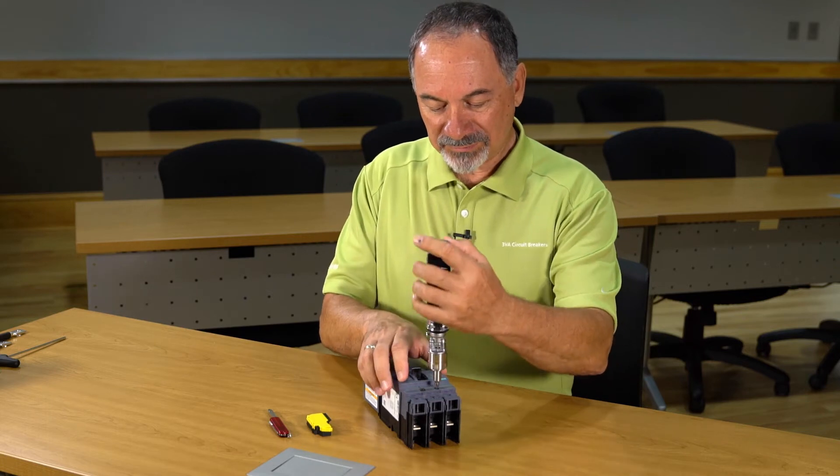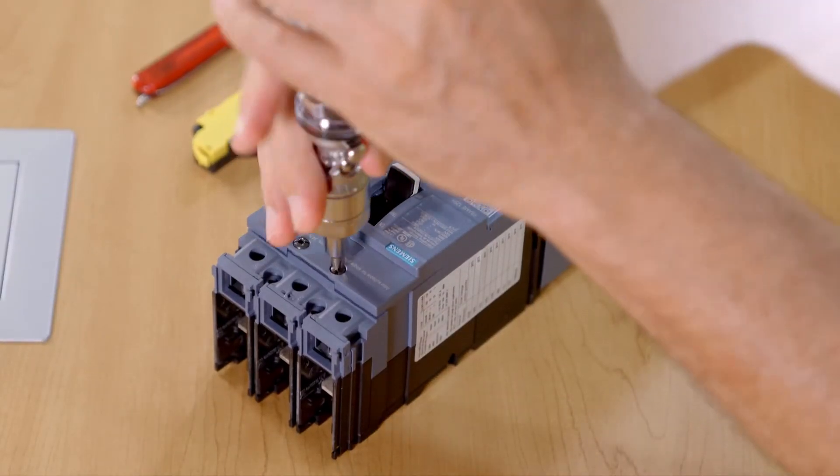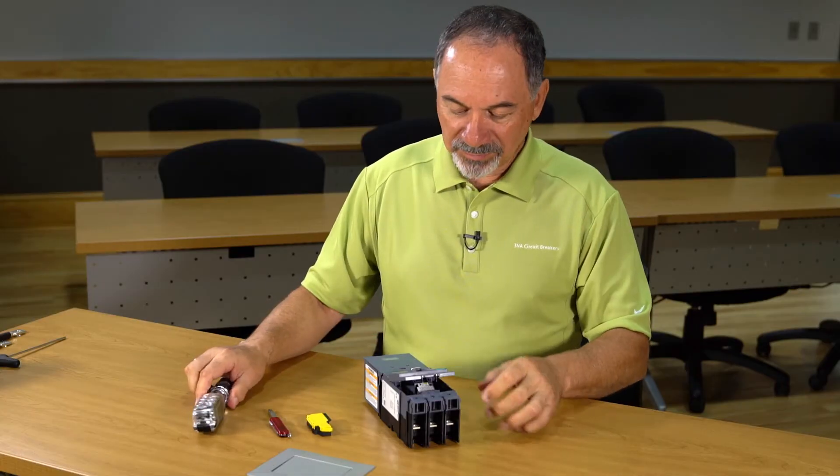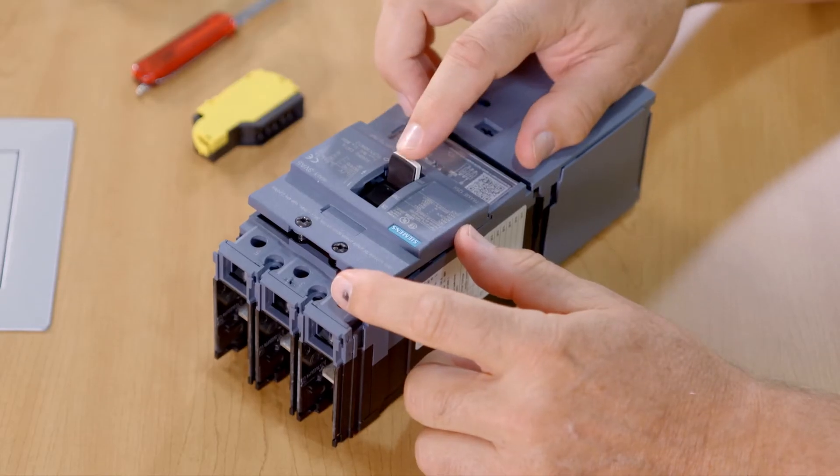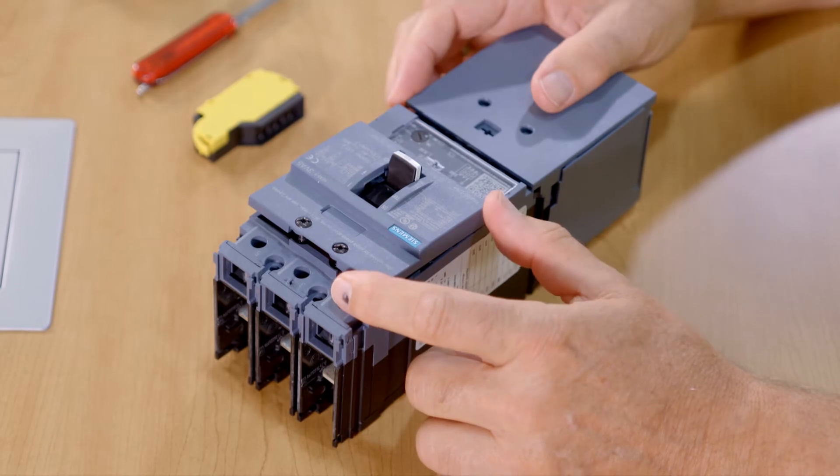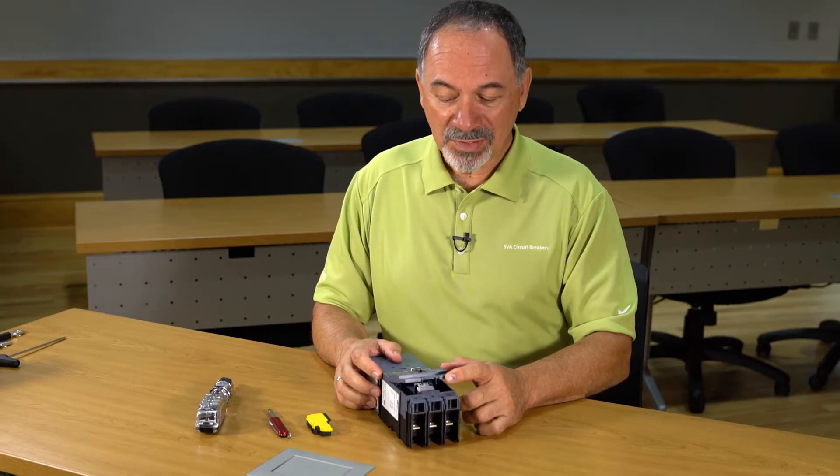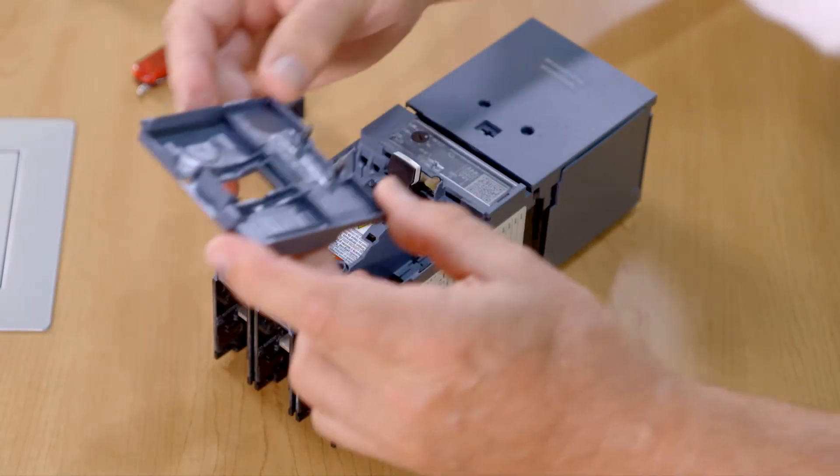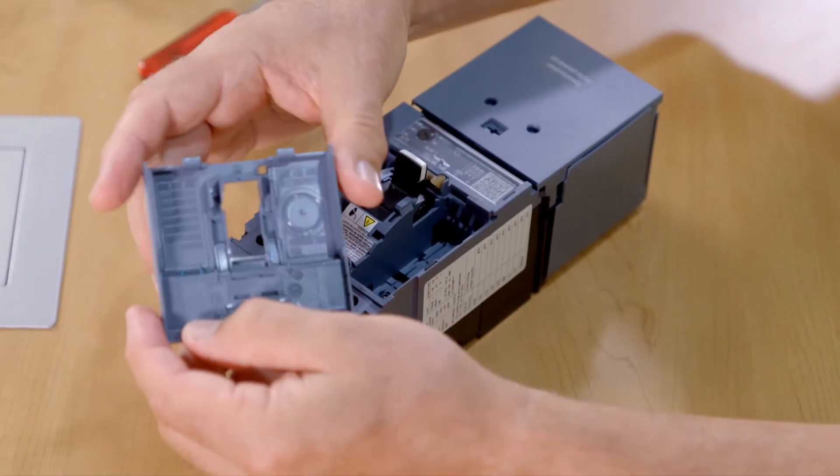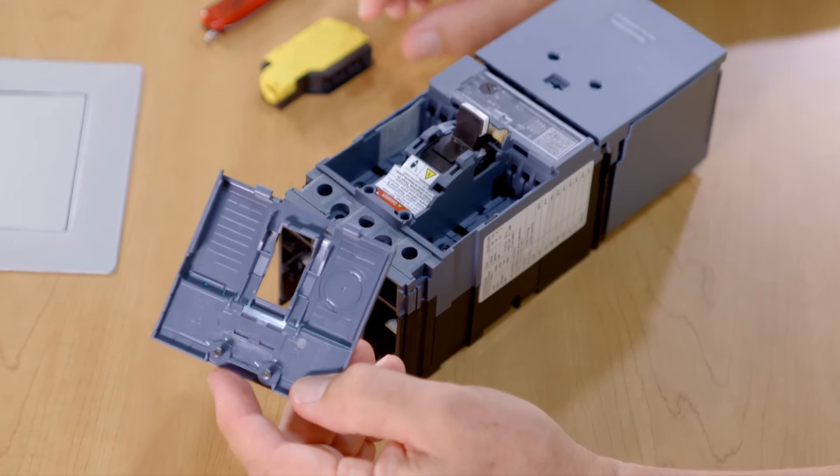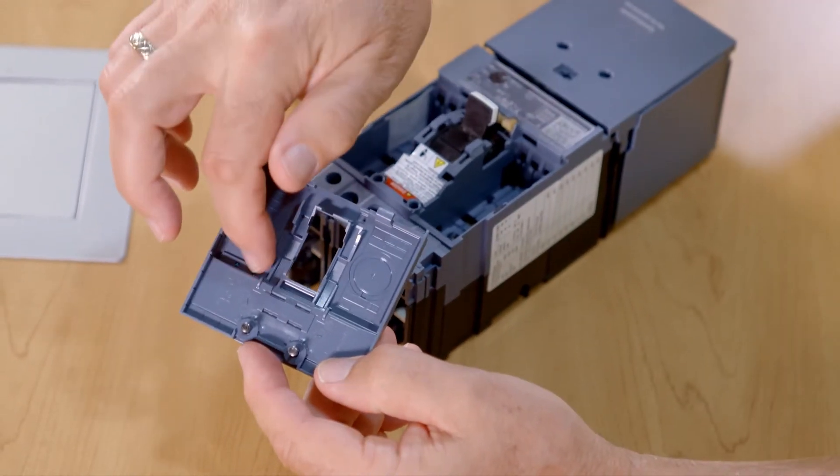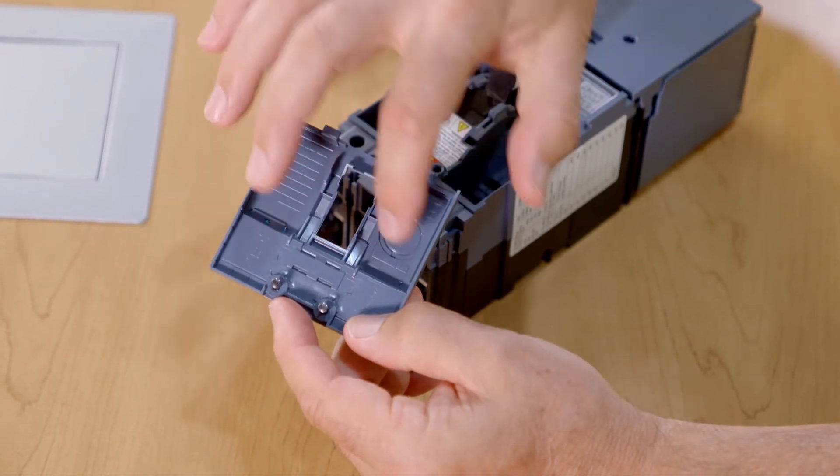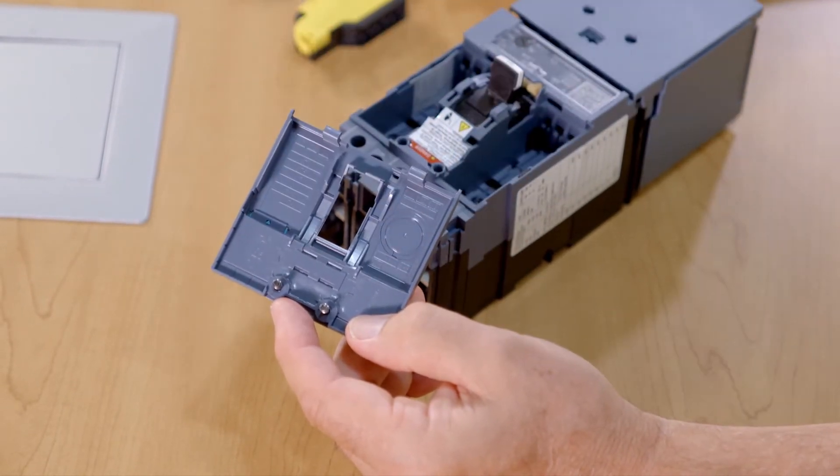First, using a Phillips screwdriver, you remove the accessory cover. Fairly simple. Making sure that the breaker is in the off position. If the breaker is in the trip position or the on position, you cannot remove this cover. When I remove the cover, the first thing I can look at, especially if I throw away the instruction sheets with the box, I can see on the back side of the accessory cover are indicators of where each accessory can be installed.